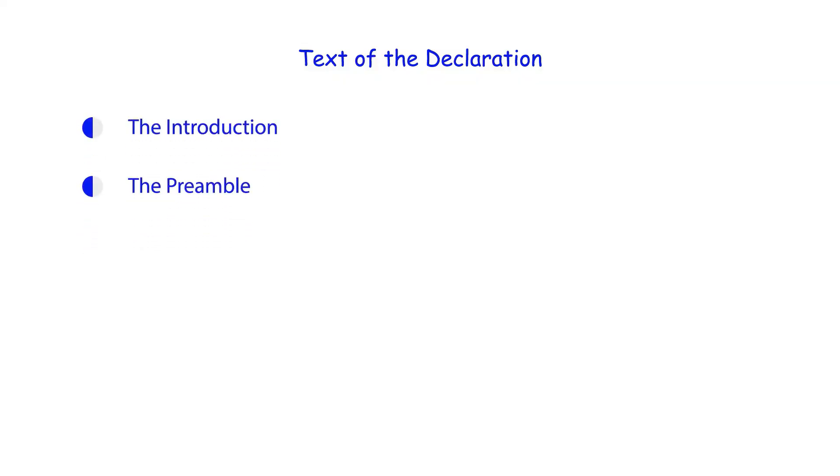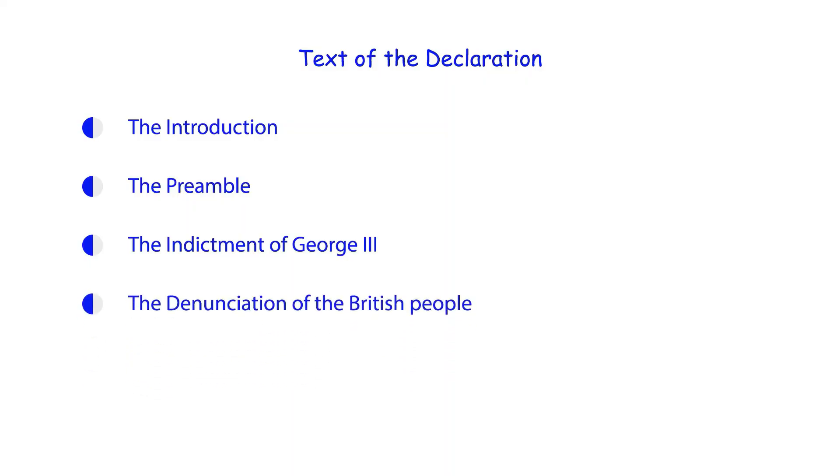The text of the Declaration of Independence can be divided into five sections: the introduction, the preamble, the indictment of George the Third, the denunciation of the British, and the conclusion.